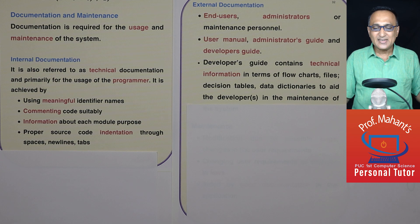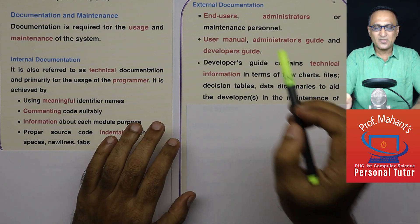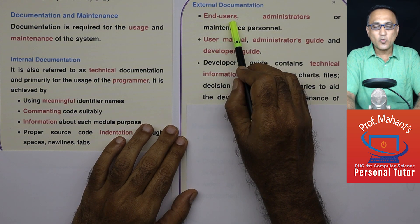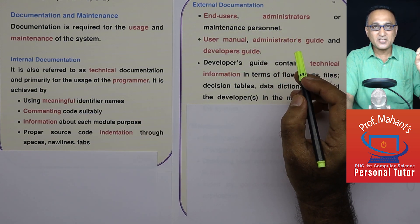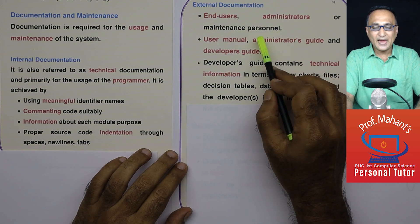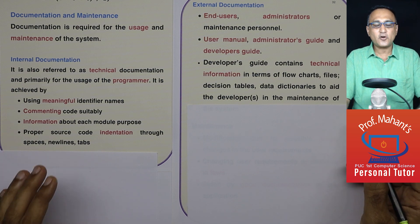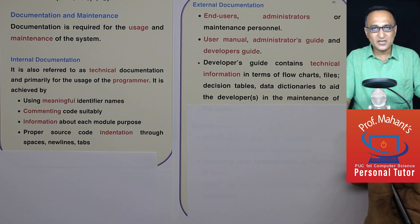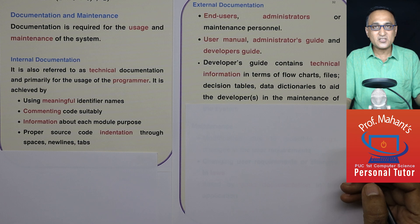External documentation works like this: let us say you develop an application — for example, the CoWIN vaccine application — which is going to be used in future for something else. Documentation is responsible for end users like you and me, so you can go and book a vaccination slot. Administrators are people who feed data and make changes, and software developers are people who may modify that software in future as new vaccines come, new age groups are added, or new locations are included.